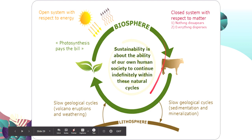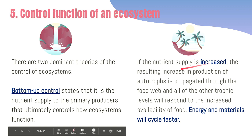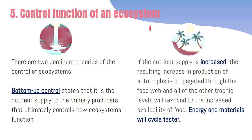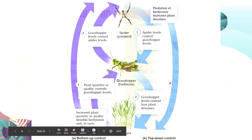The fifth principle is the control function of an ecosystem. We have two dominant theories. The first is bottom-up control, which states that it is the producers who control how the ecosystem functions. If the nutrient supply increases, this results in an increase in the production of autotrophs or producers, which is then propagated throughout the rest of the food web, and all other trophic levels will also respond to that increase in food availability, cycling energy and materials faster.